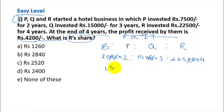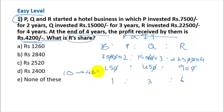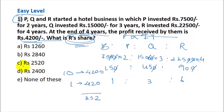After simplification, the values become 150 : 450 : 900. Cancelling zeros and dividing by 150 gives the ratio 1:3:6. The total parts sum to 10, equivalent to ₹4,200, so 1 part = ₹420. R's share is 6 parts = 6 × 420 = ₹2,520.